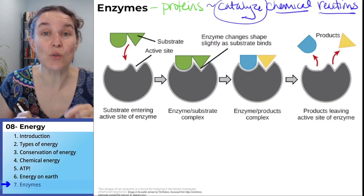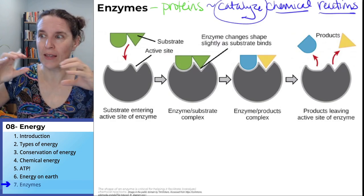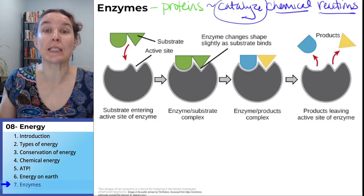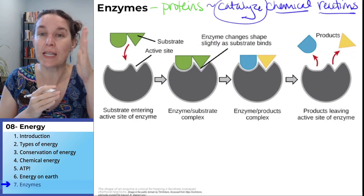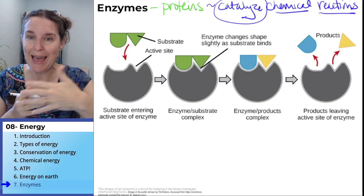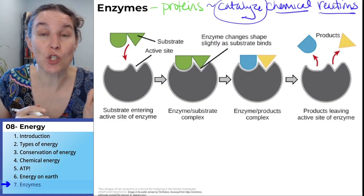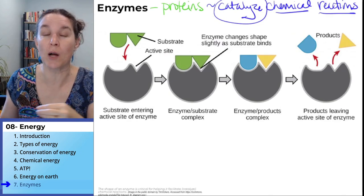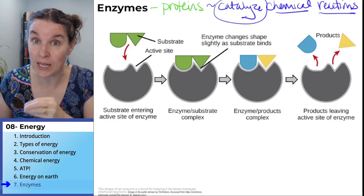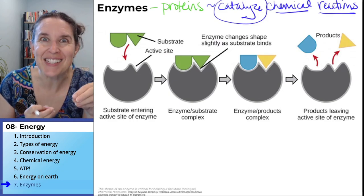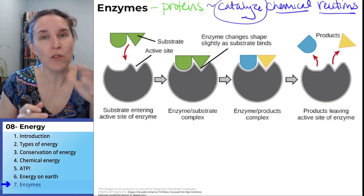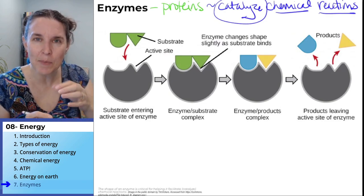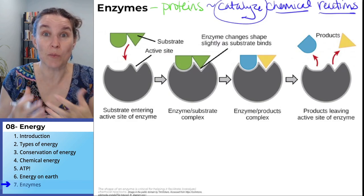Enzymes don't get used up. In our chemical equations — like cellular respiration and photosynthesis — there are a ridiculous number of enzymes involved in making those reactions happen. Those enzymes don't get used up. The glucose in cellular respiration does get used up — it gets changed into carbon dioxide and water. But the enzymes that helped make all that happen don't get used up. They're called catalysts because they help make something happen but aren't actually part of the reaction themselves.